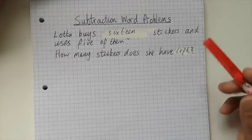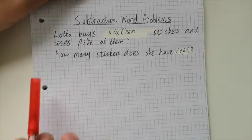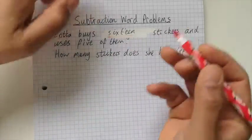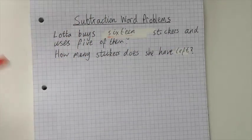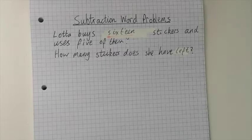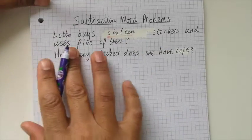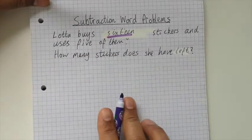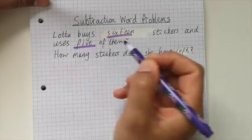First of all, let's find the numbers. We know how to do that. Lotta buys 16 - this pen doesn't work, I'll get another one. So start that again: Lotta buys 16 stickers and uses 5 of them.